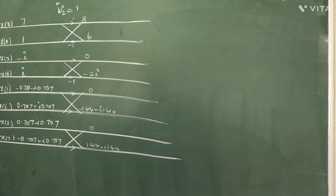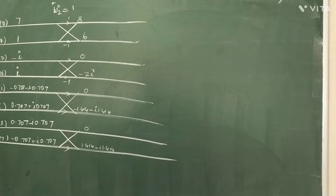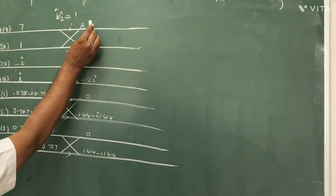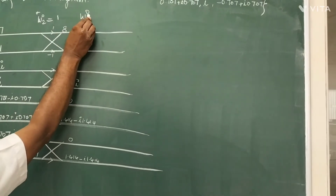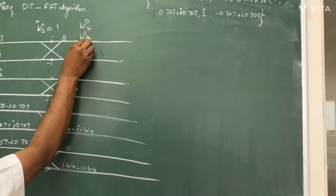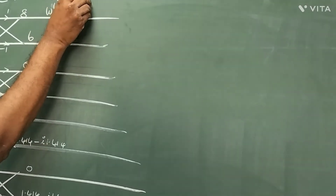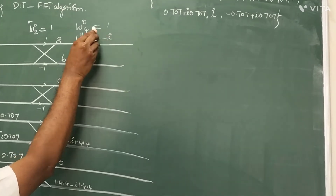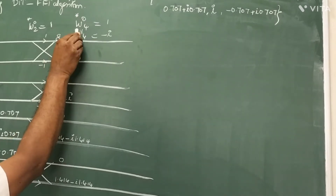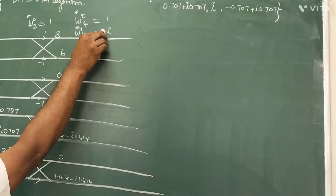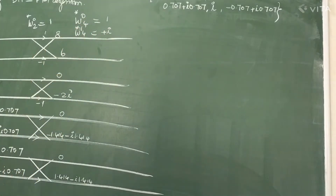Next is Stage 2, which is the four-point DFT. For the four-point DFT, the twiddle factors are W(0,4) and W(1,4). W(0,4) has value 1 and W(1,4) has value minus i. We have to take the conjugate of these: the conjugate of 1 is 1, and the conjugate of minus i is plus i. These are the twiddle factors for Stage 2.